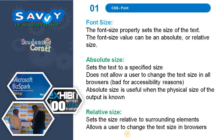Now font size. The font-size property sets the size of the text. The font-size value can be absolute or relative. The absolute size sets the text to a specified size, does not allow a user to change the text size in all browsers, and is bad for accessibility reasons. Absolute size is useful when the physical size of the output is known.